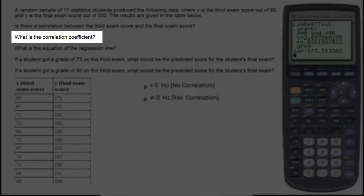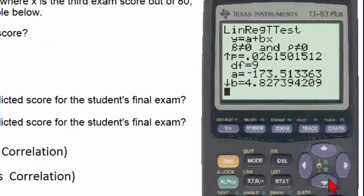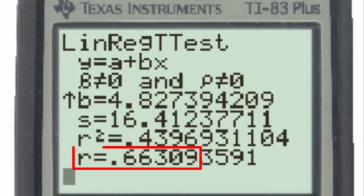In answering the question, what is the correlation coefficient? All we need to do is to scroll down to where r is given, and we see that r is equal to 0.6631 to four decimal places.